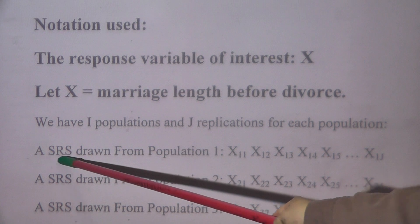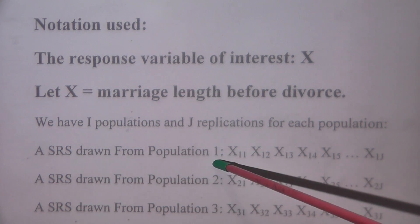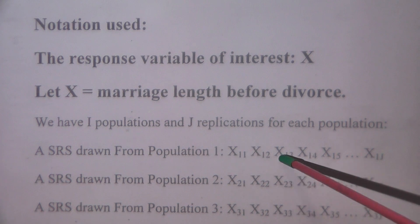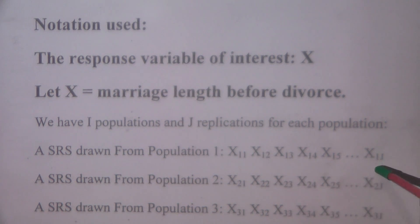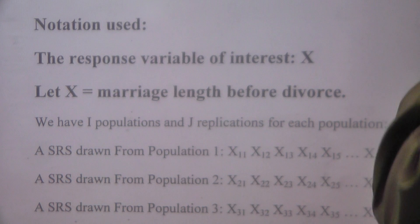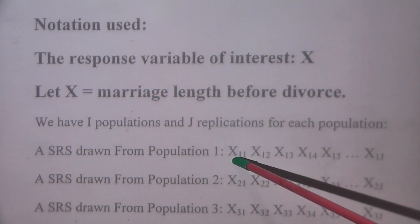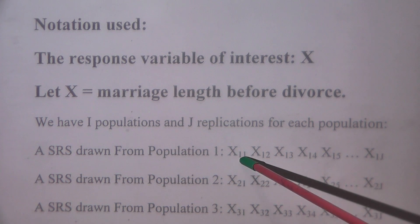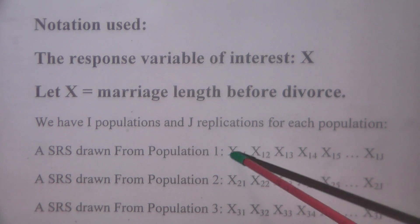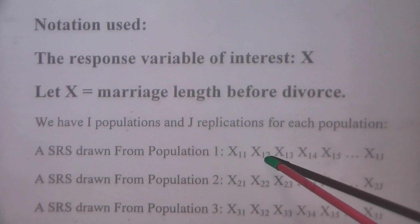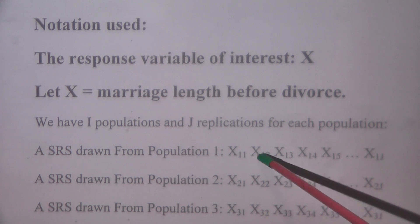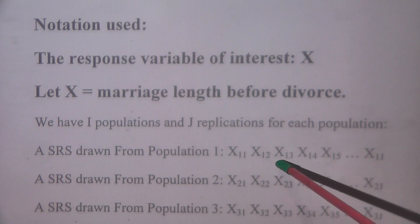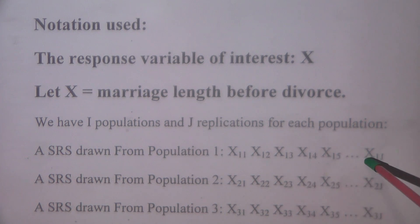A simple random sample drawn from population one is denoted by x₁₁, x₁₂, x₁₃, all the way up to x₁ⱼ. The first index, one, means first marriage. The second index refers to the couple number — the first couple of the first marriage, the second couple of the first marriage, the third couple, and so on.